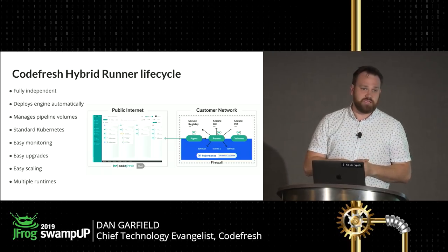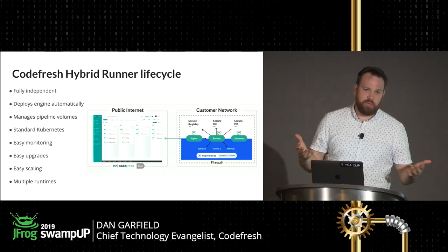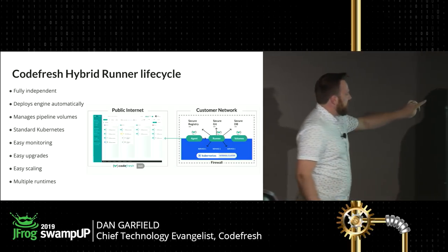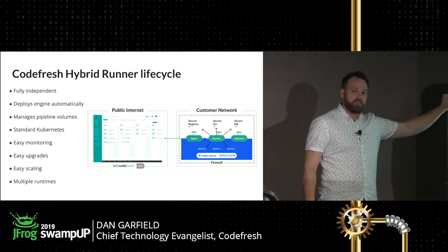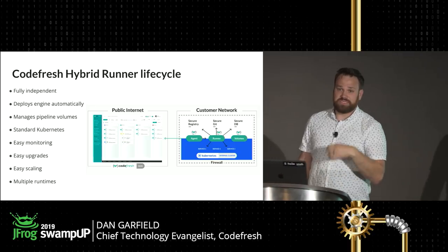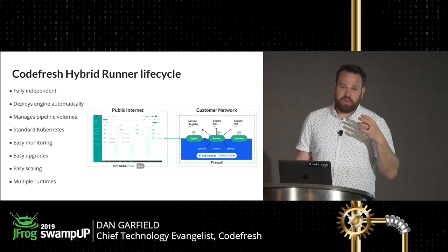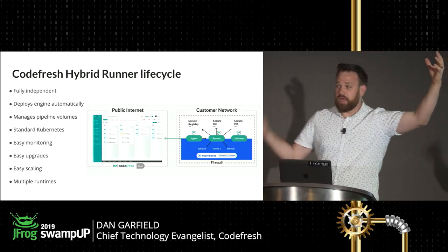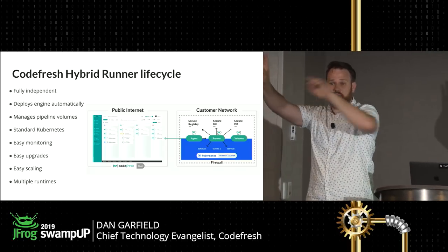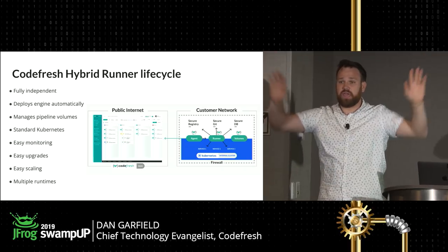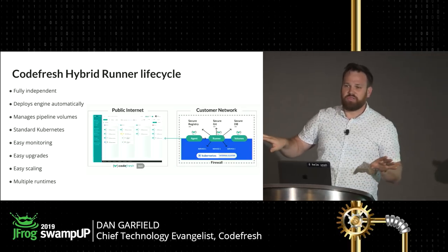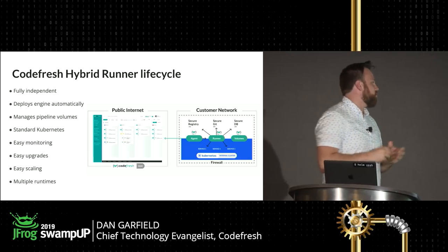The runner also manages pipeline volumes. Every step in a pipeline is its own container. To make communication between those containers easy, Codefresh creates a shared volume for that pipeline that every step can read and write to. You can do your git clone in one step and your build in the next step working off the same volume. We automatically cache that volume and make it persistent, so every time the pipeline executes it reattaches. All the optimization you used to do for caching is basically done automatically in the background, making pipelines run much, much faster.